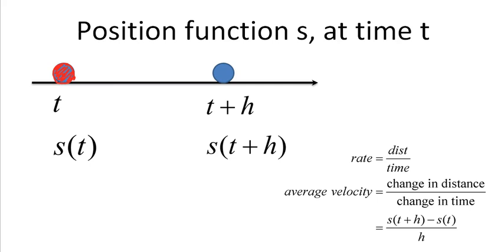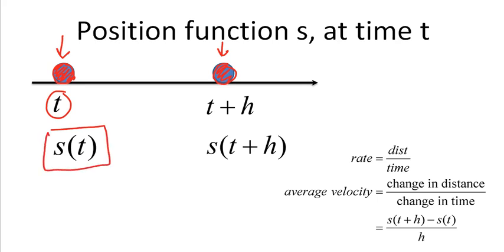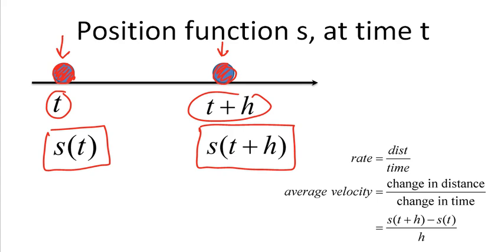After some time, the object is here. t is the time the object was at its starting position. If I allow that object to move for h seconds, it's now moved a total time of t plus h. t was its beginning time; if I allow it to move for h seconds, it's now t plus h. s is a function that determines the position at that time. So s of t is the object's position at t seconds, and s of t plus h is the position after t plus h seconds. To get the position, you need the time — that's what a function is.